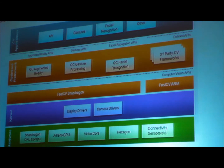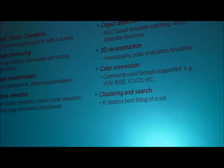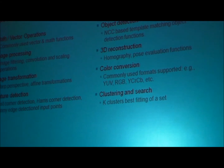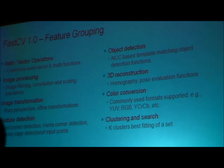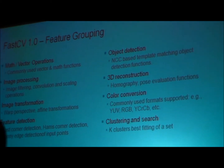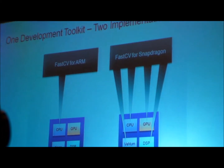Hexagon is a DSP, along with video cores and app processors. We have various feature groupings for our library — more information is available at developer.qualcomm.com/FastCV with detailed information on every function. FastCV for ARM just uses the apps processor, while FastCV for Snapdragon takes advantage of all the different processors on our Snapdragon chipset.